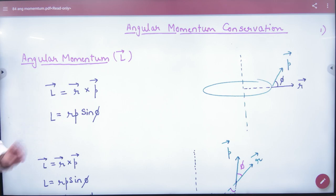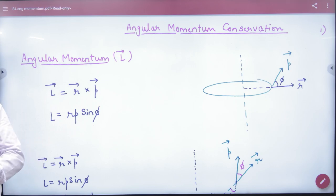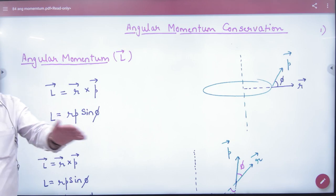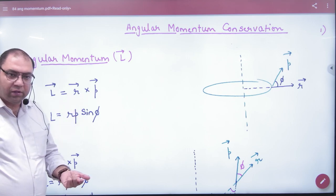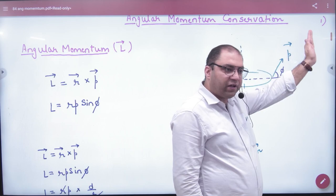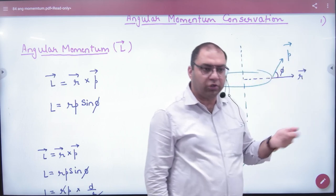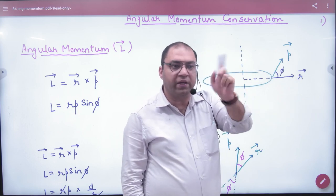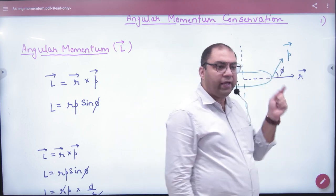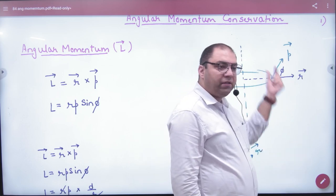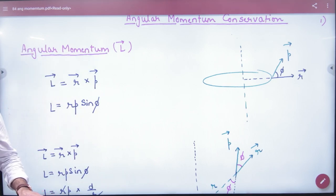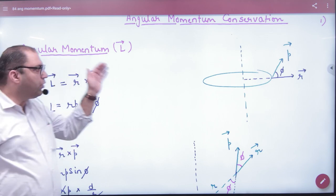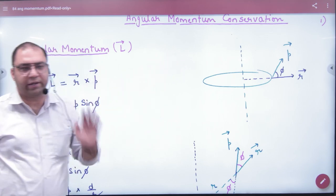Angular momentum has the formula L = R × P. This is exactly the same as the torque vector. What was the torque vector? R × F. So for angular momentum it is R × P, and if we expand this, it is R × P × sin φ. Just as torque is R × F × sin φ, angular momentum is the same — the only difference is that where F is used, we use P.